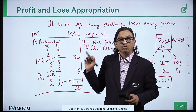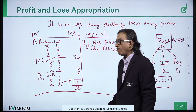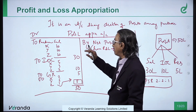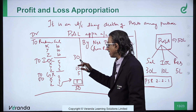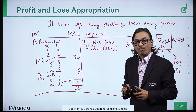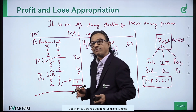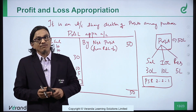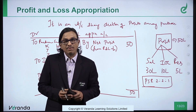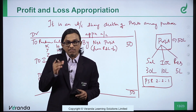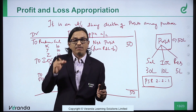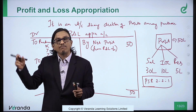An account where you show how the profits of the business are appropriated for various purposes — 30 for salary, 10 for interest, 5 for reserve, remaining 5 distributed based on profit sharing proportion — this account is known as the profit and loss appropriation account, and this is how we prepare it. Remember, salary or interest can be paid only when it is mentioned in the partnership deed.